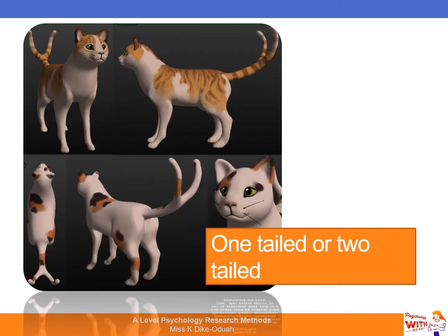A good way to remember the difference between one-tailed and two-tailed tests is to imagine a cat with one tail and a cat with two tails. The cat with one tail tells you exactly where it's heading. A cat with two tails — it's unclear which direction it's going in. It's the same with statistical tests: a one-tailed test tells you exactly the direction of the results, whereas a two-tailed test tells you there's a difference or an association, but not which direction. This mirrors the difference between a directional and a non-directional hypothesis.